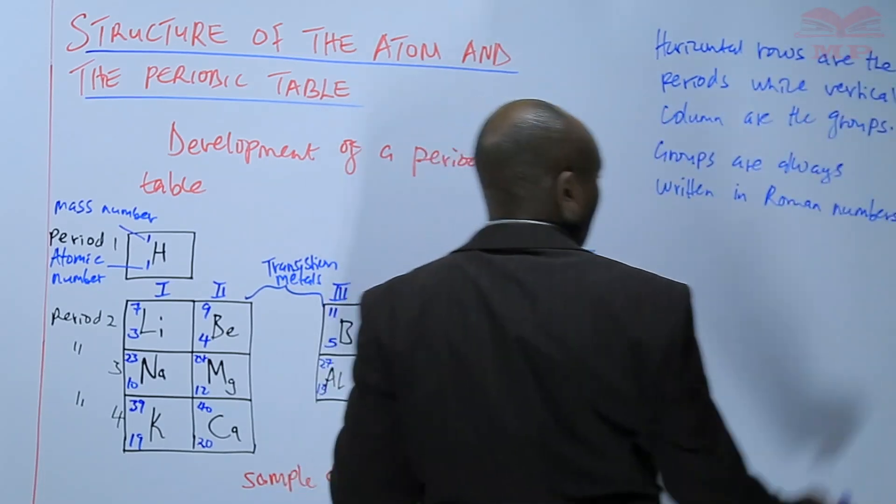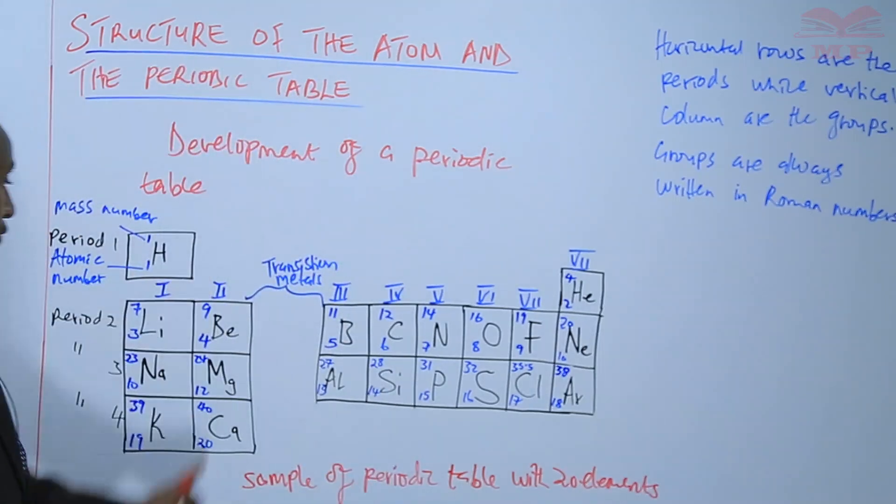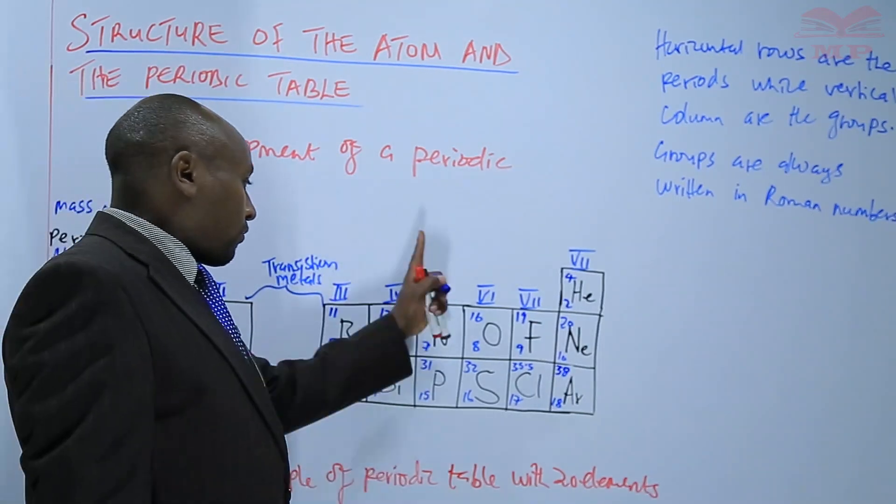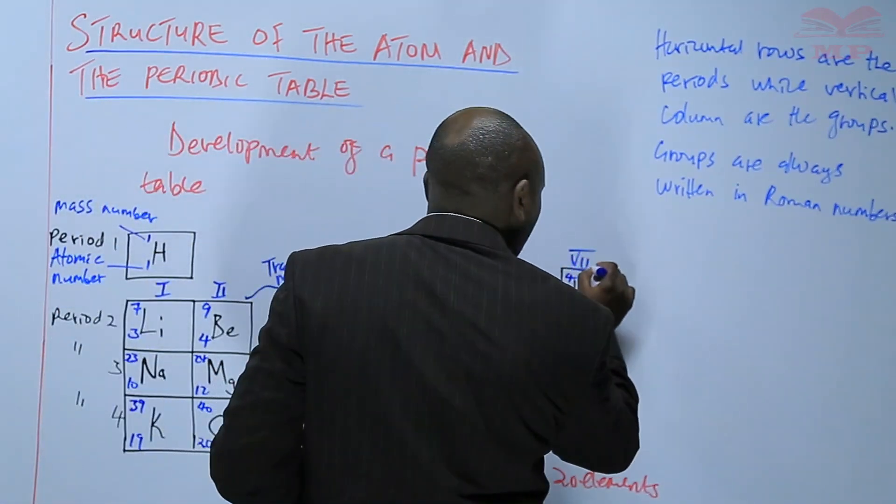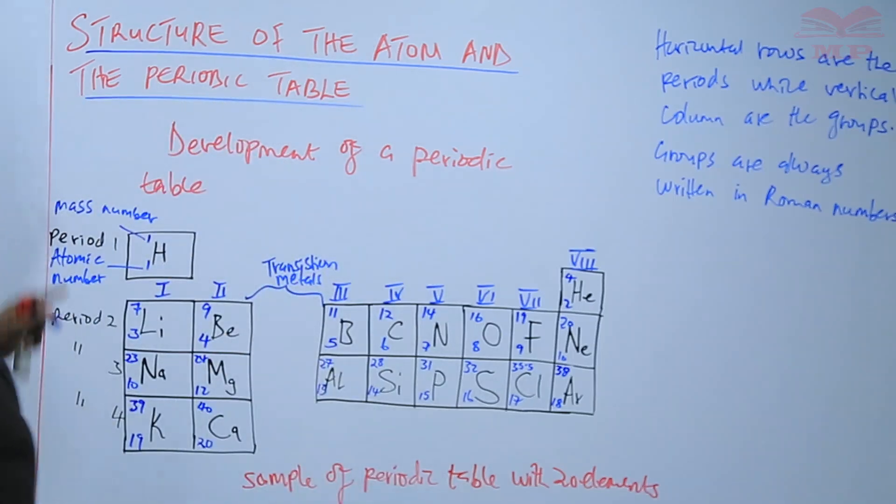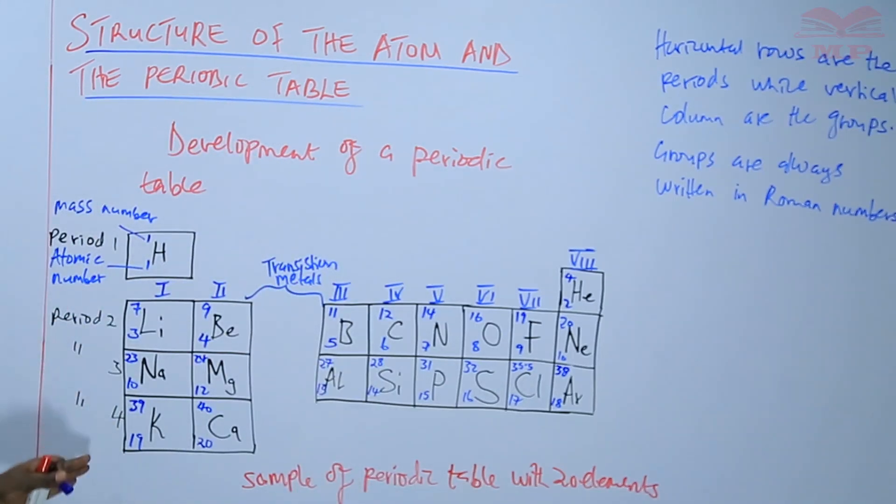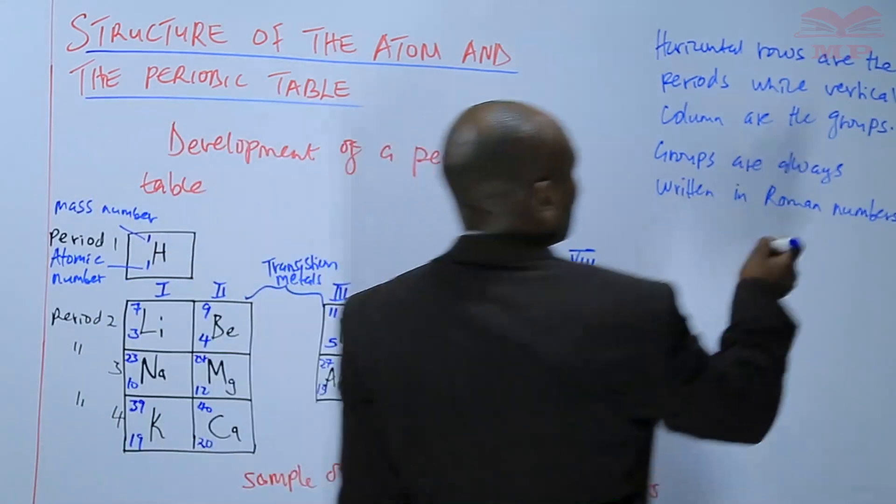In this periodic table, we have group 1, 2, 3, 4, 5, 6, 7, 8, so these are a total of 8 groups in the periodic table. We can see that there are 8 groups.